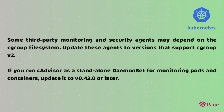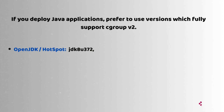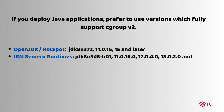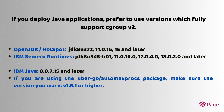If you deploy Java applications, prefer to use versions which fully support CGroup V2. For OpenJDK Hotspot: JDK 8u372, 11.0.16, 15 and later. For IBM Semeru Runtimes: JDK 8u345-b01, 11.0.16.0, 17.0.4.0, 18.0.2.0 and later. For IBM Java: 8.0.7.15 and later. If you are using the go.uber.org/automaxprocs package, make sure the version you use is 1.5.1 or higher.